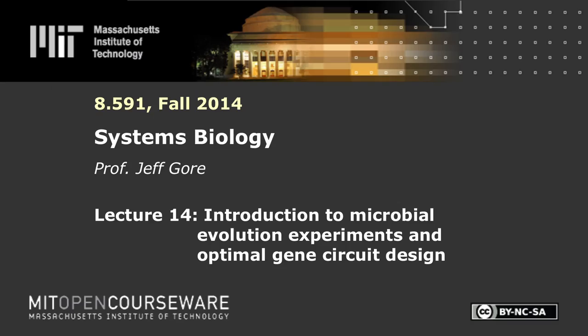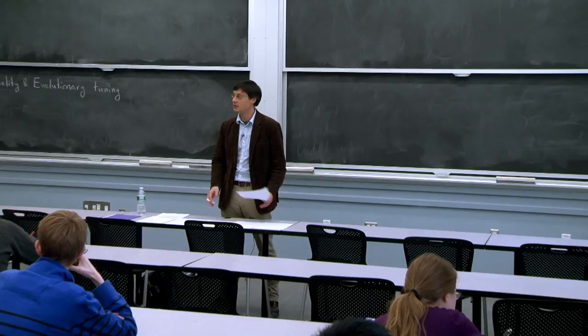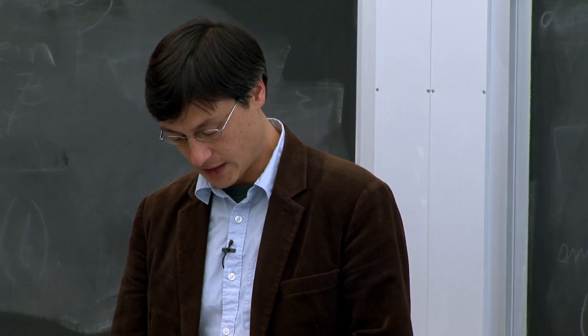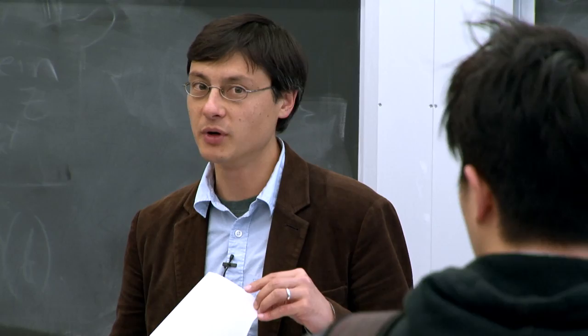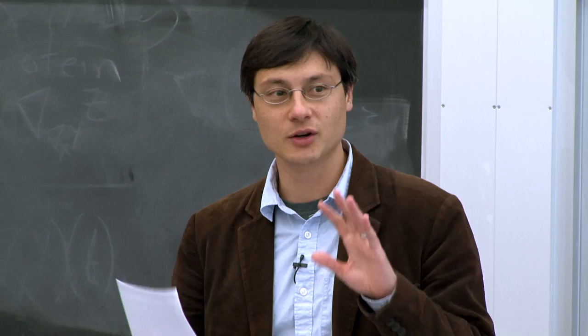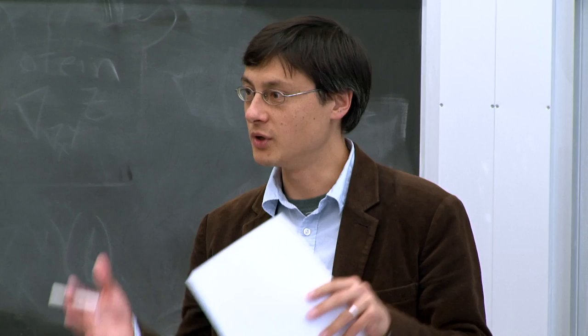Today our goal is to go through the paper that you read by Deco and Elan, 'Optimality and Evolutionary Tuning of the Expression Level of a Protein,' published in Nature in 2005. I think it's a very interesting paper exploring some big general ideas, but also in some ways rather misleading. We'll try to discuss the connections between experiment, theory, prediction, and so forth.